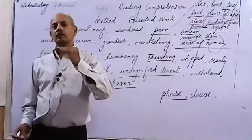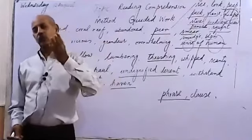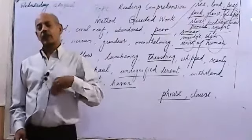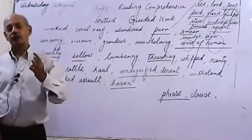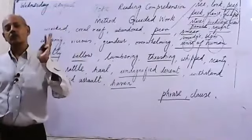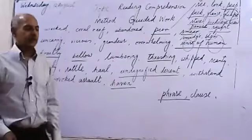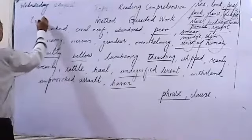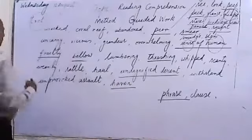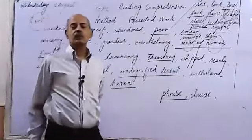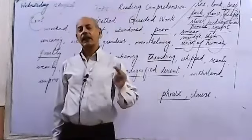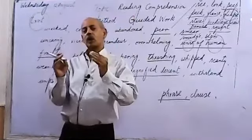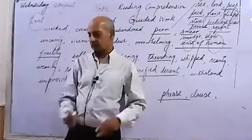For example, 'stroll' - stroll is a casual walk. Then 'amble'. There is another word, 'saunter' - saunter is also a slow, casual walk. And there is a word 'trot'. If somebody is trotting, the person is running at a moderate speed. It is in between brisk walk and running.